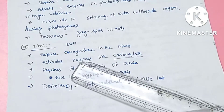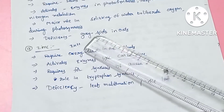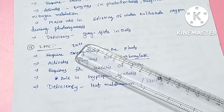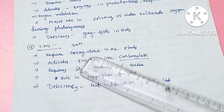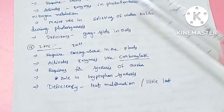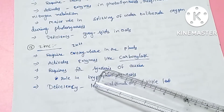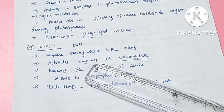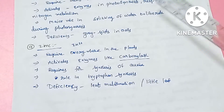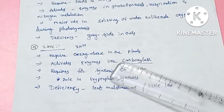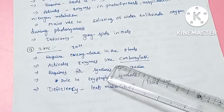The next element is zinc, absorbed in the Zn2+ form. Like iron, it is required in every part of the plant. Zinc also activates enzymes, including carboxylase.